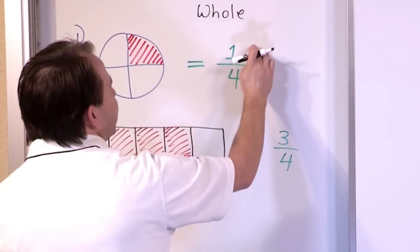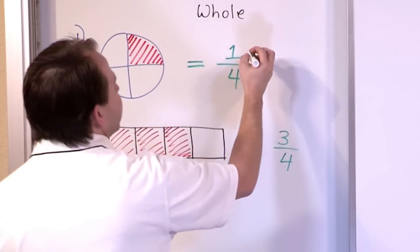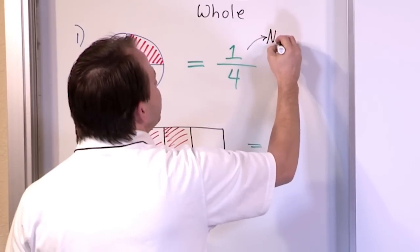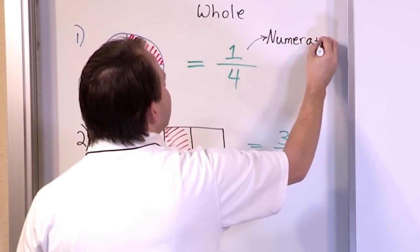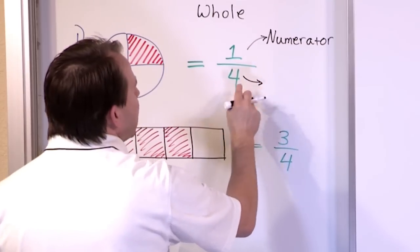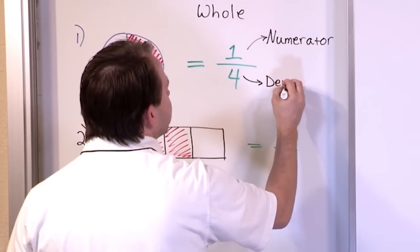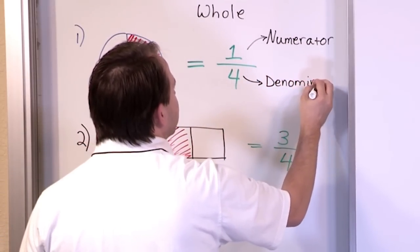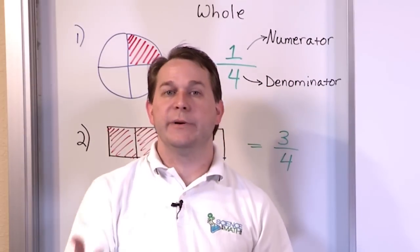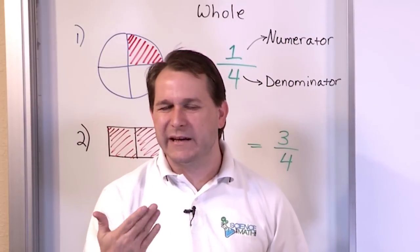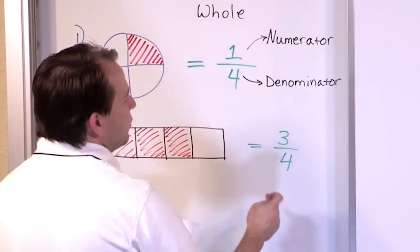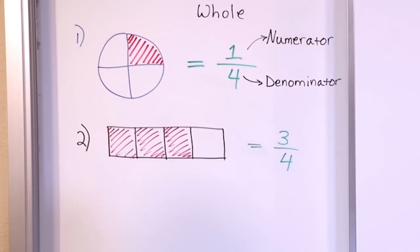Now is a good time to review the special names that we have for the top and the bottom of this fraction. When you have a fraction, the top number is always called the numerator. I know it's a big fancy sounding word, but it's called numerator. And the bottom number is always called the denominator. You can kind of think of denominator being on the bottom, denominator on the bottom. And the numerator is the top number. So in this fraction, the three is called the numerator and the four is called the denominator.